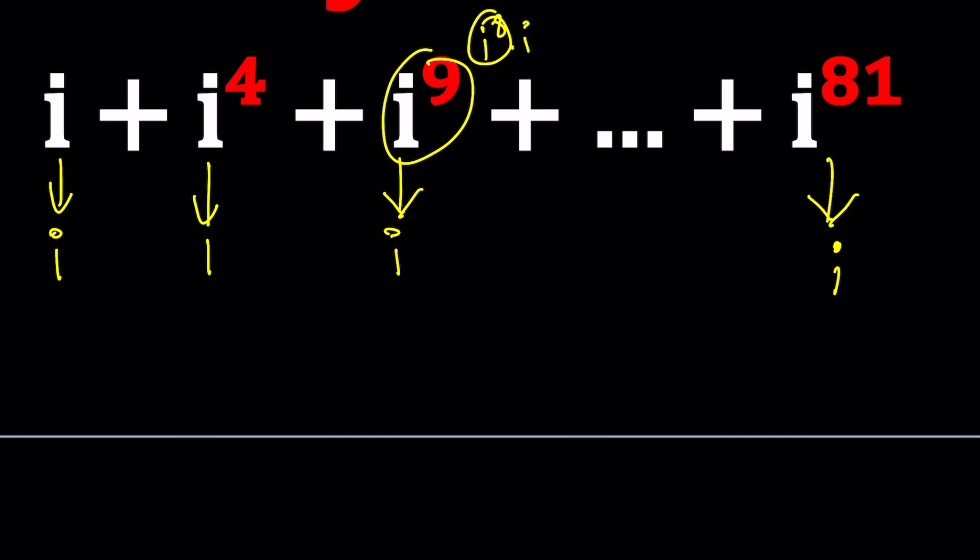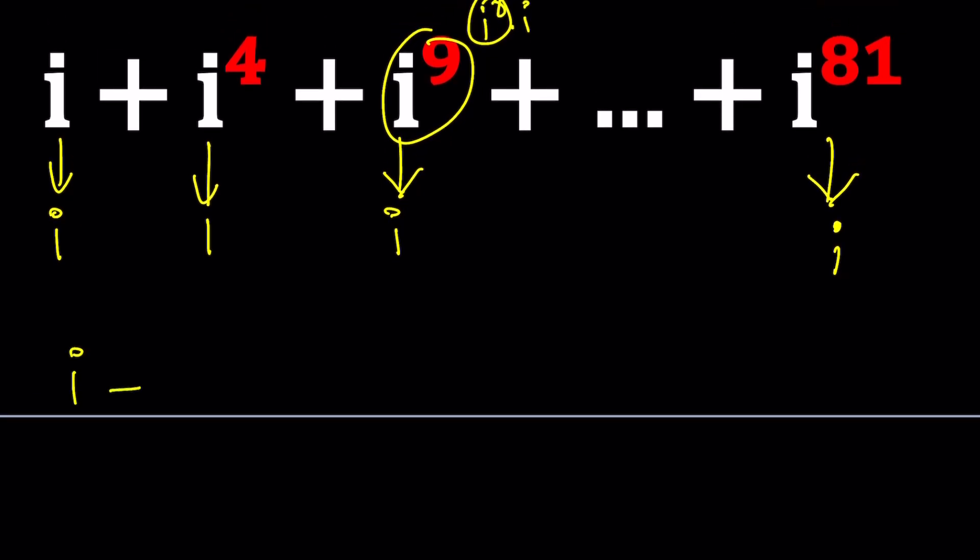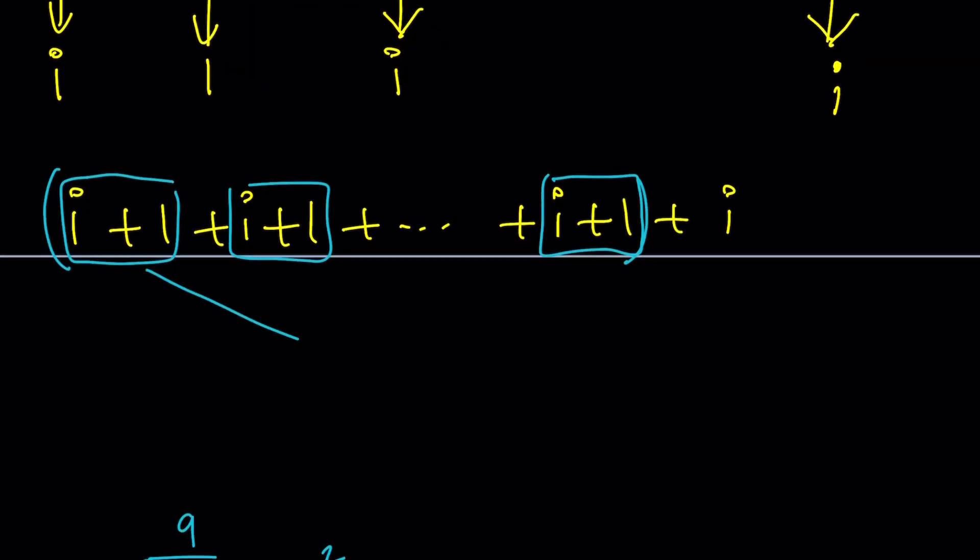So here what we can do is we have i plus 1 plus i plus 1 dot dot dot. And then we're going to have i plus 1 and then a final i. We have i to the first to i to the 81. So there are 9 terms. And obviously, I wrote most of them, by the way. We're going to have a leftover. So if you kind of consider these terms, they're going to come in pairs like this, right? i plus 1, i plus 1. And we're going to have a leftover. So the question is, how many pairs do we have? And the answer is, we have 4 pairs. Why? Because we have 9 terms. Separate 1, you have 8. Divide by 2.